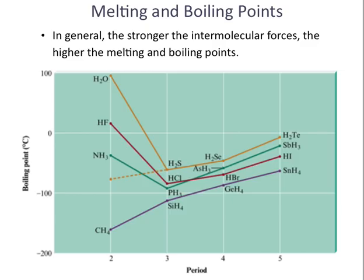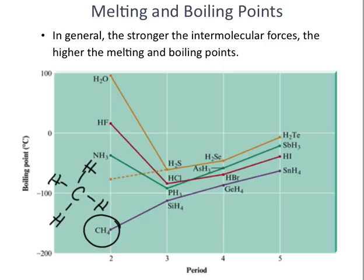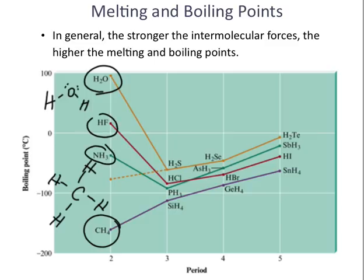There's a relationship between boiling and melting points and intermolecular forces. The higher the melting point, the stronger the intermolecular force. The higher the boiling point, the higher the intermolecular force. Methane is nonpolar and has a super low boiling point. Water, with hydrogen bonding, has a much higher boiling point. Dipole-dipole substances fall somewhere in between.